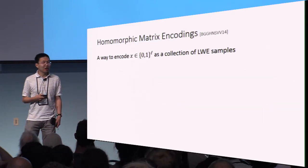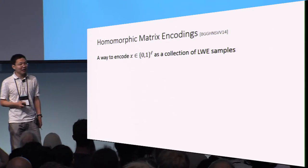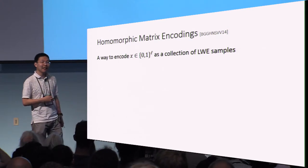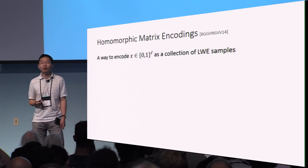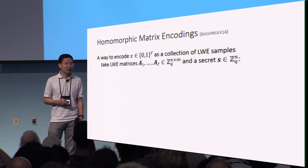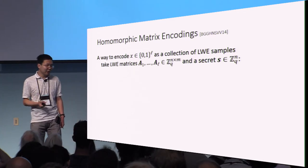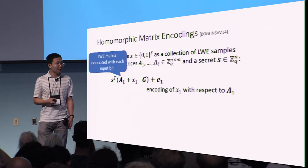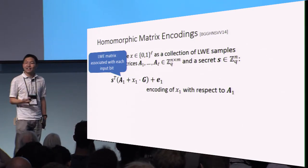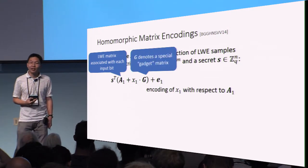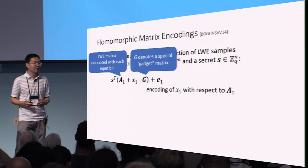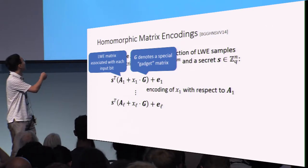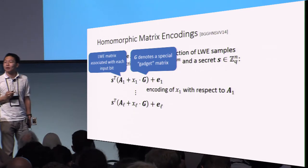The second ingredient we require is the notion of a homomorphic matrix encoding, introduced first in the work of Boneh et al. in the context of constructing attribute-based encryption. A homomorphic matrix encoding gives us a way of encoding inputs x, where x is modeled as an L-bit string, as a collection of LWE samples. For each bit of the input x, we associate with it a uniform LWE matrix A_1 through A_L. An encoding of a bit x_i is then an LWE sample with respect to the matrix A_i associated with that input bit, as well as an LWE secret S. G here is a special gadget matrix. In this way, we encode each bit of the input as different LWE samples according to each of the different LWE matrices, but with a common LWE secret S.